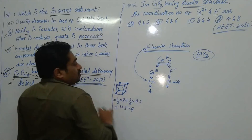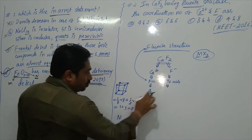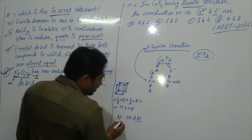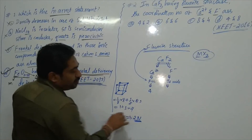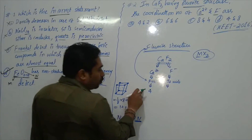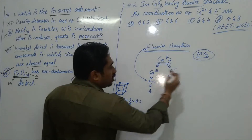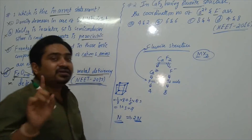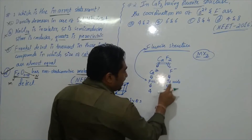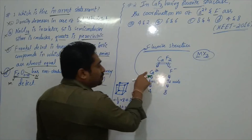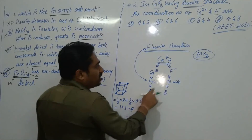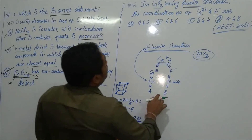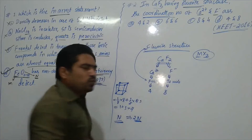If n is the number of particles in FCC, then the number of tetrahedral voids is 2n. If there are 4 calcium atoms in FCC, then 8 tetrahedral voids are formed. These tetrahedral voids are occupied by fluoride ions. So the number of calcium ions is 4 and the number of fluoride ions is 8.